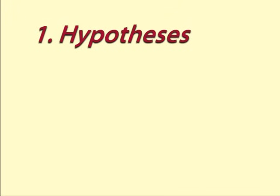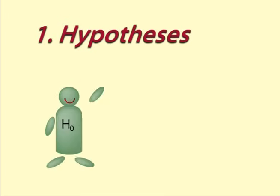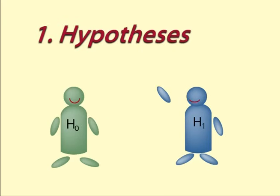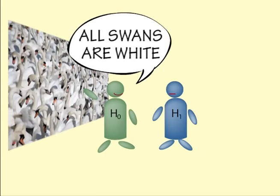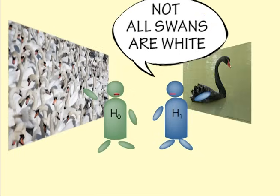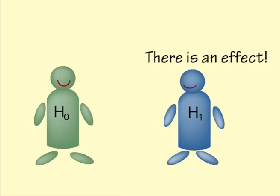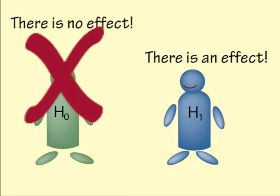Step 1: Hypothesis. Decide on your hypotheses. You need a null hypothesis, H0, and an alternative hypothesis, H1 or HA. Inferential statistics is based on the premise that you cannot prove something to be true, but you can disprove something by finding an exception. You decide what you're trying to provide evidence for, which is the alternative hypothesis, then you set up the opposite as the null hypothesis and find evidence to disprove that.